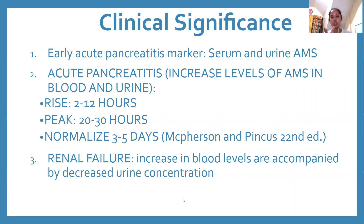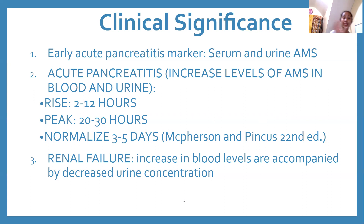According to MacPherson and Pincus, 22nd edition, for amylase in acute pancreatitis: the rise is as early as 2 to 12 hours, peaks at 20 to 30 hours, and normalizes within 3 to 5 days.